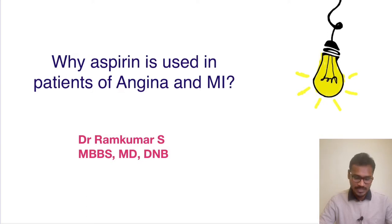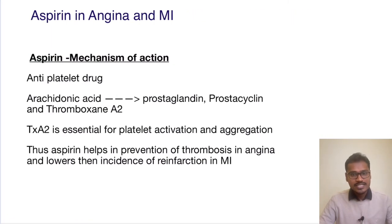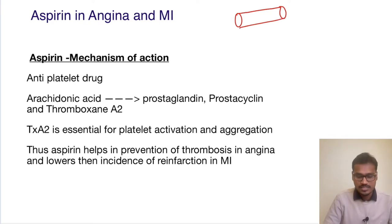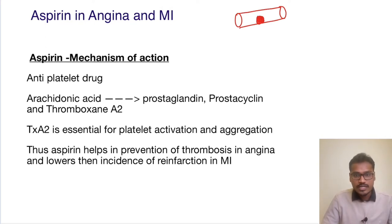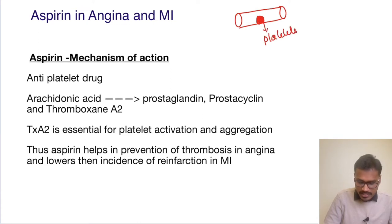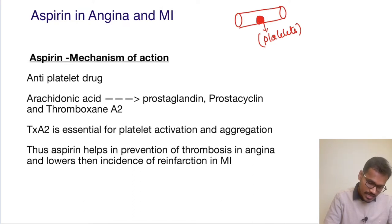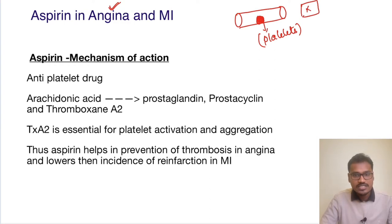But let's try to understand why aspirin is specifically used for angina and MI. In both angina and MI, the basic pathology is thrombus formation in the blood vessels. Thrombus is nothing but an aggregate of lots and lots of platelets. The platelets get aggregated due to various reasons, causing obstruction in the blood vessel. If it causes transient myocardial ischemia, it is called angina; if there is tissue damage itself, we call it myocardial infarction.